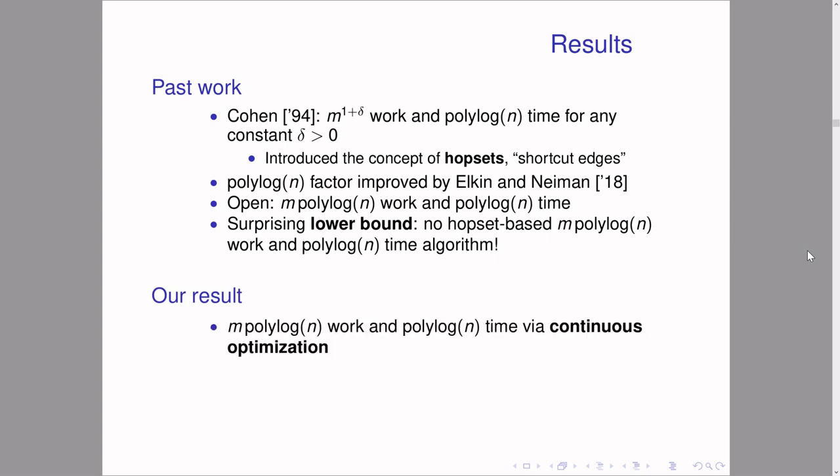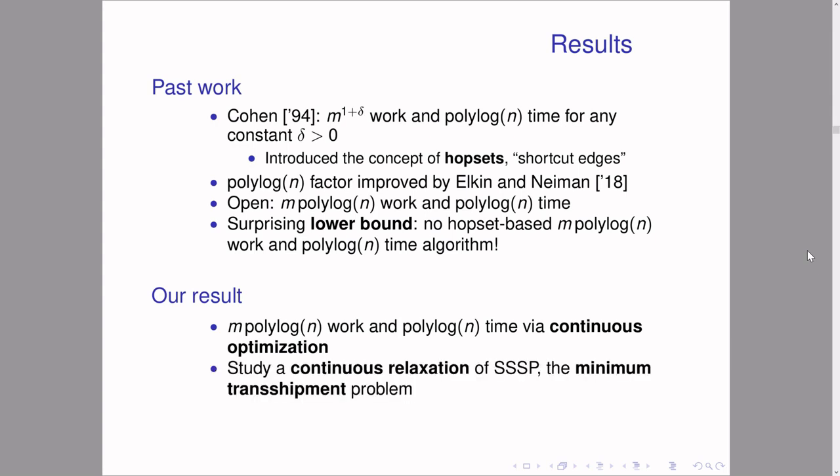Our result bypasses the hopset barrier by tackling this problem from a completely new direction: the direction of continuous optimization, which has seen a lot of recent success in similar problems like approximate max flow. In our setting, in order to employ continuous optimization, we would like some kind of continuous relaxation of the SSSP problem. It turns out the minimum transshipment problem, otherwise known as uncapacitated min-cost flow, is a good choice for us.